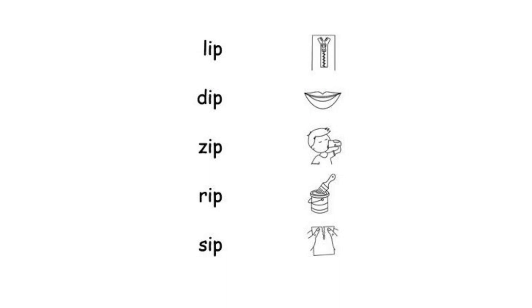Here we need to read the -ip word and match it with the picture. Let's start with the first one: L-I-P, lip. Where's the picture of the lip? Yes, this one. So we draw a line.